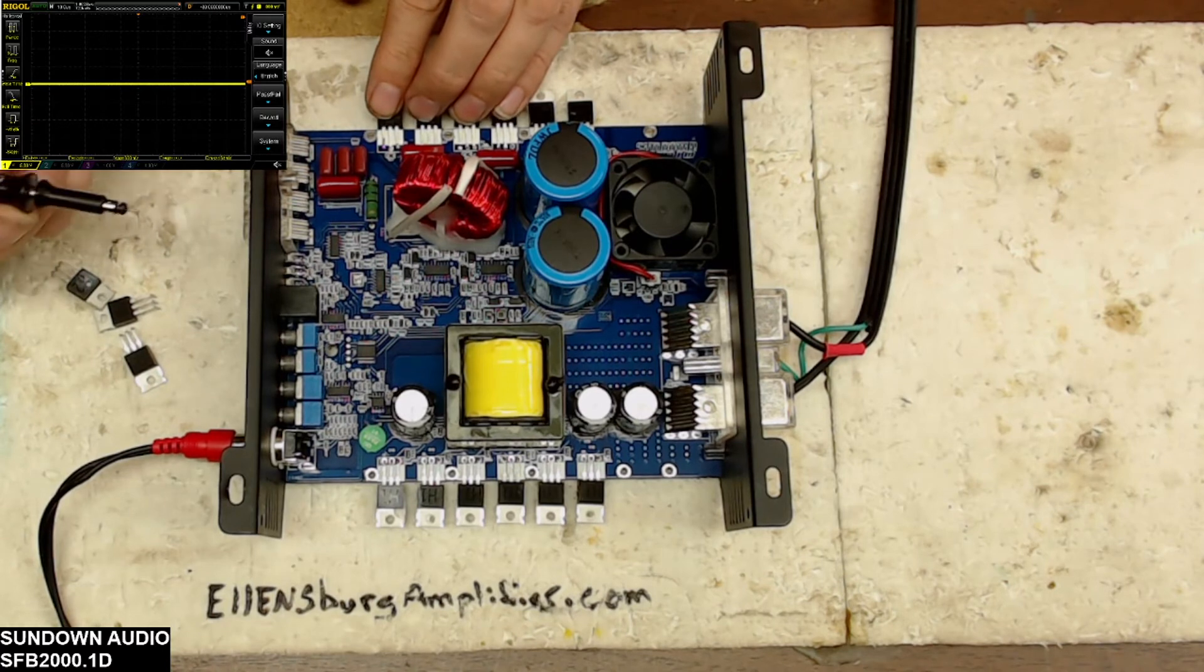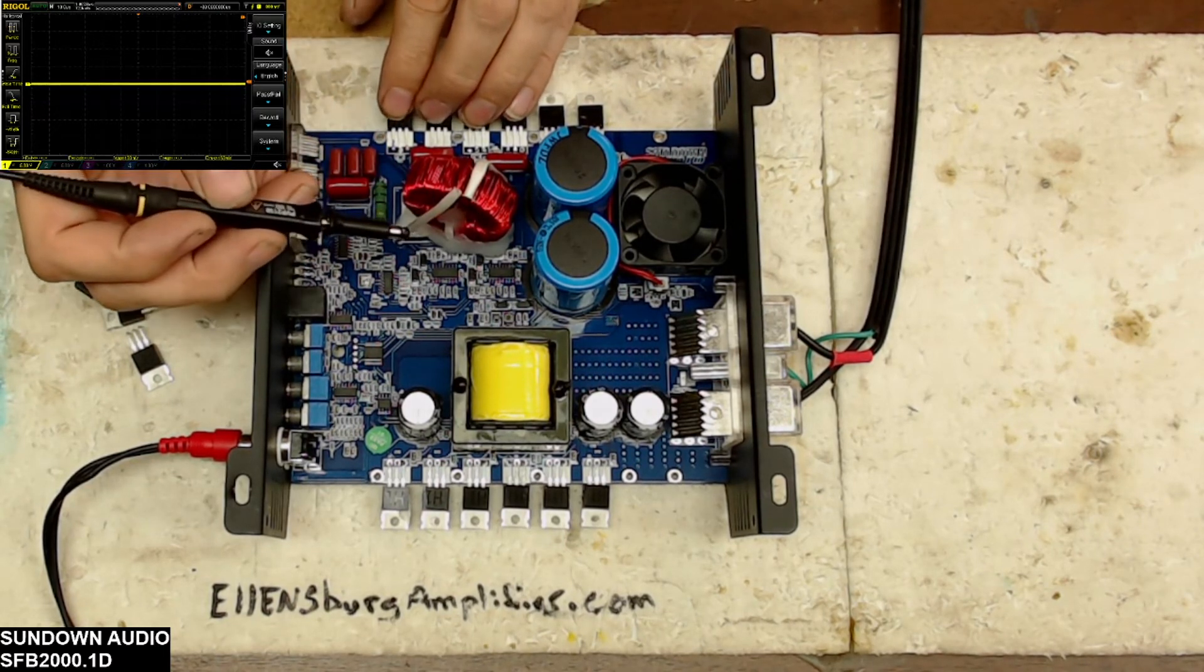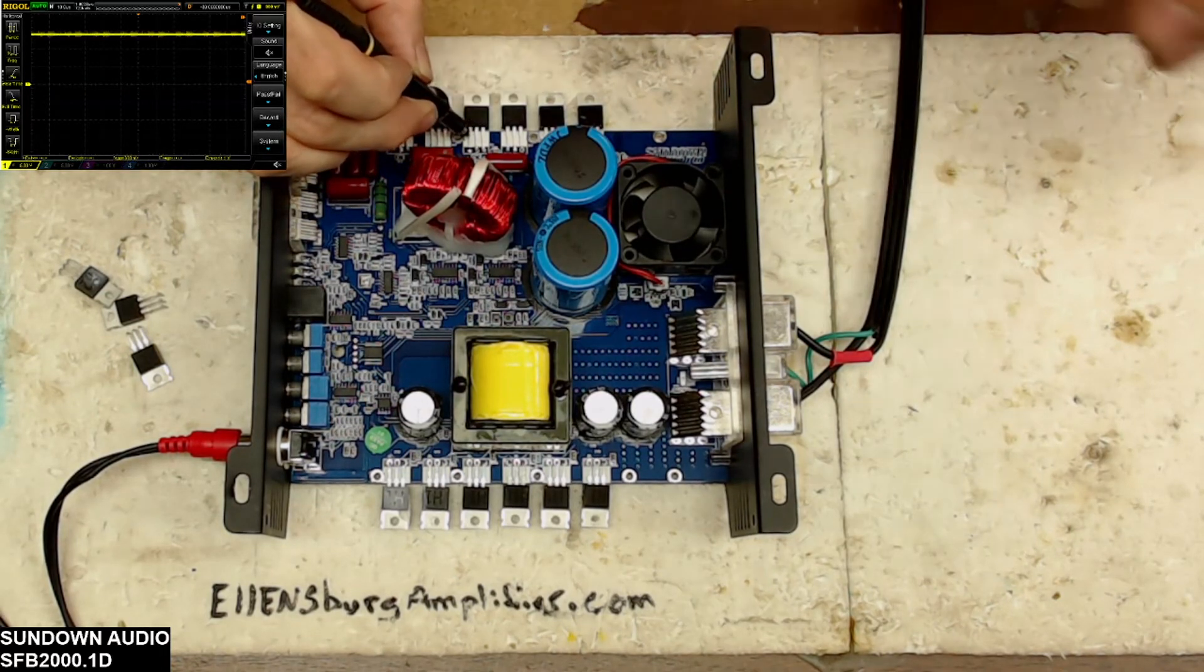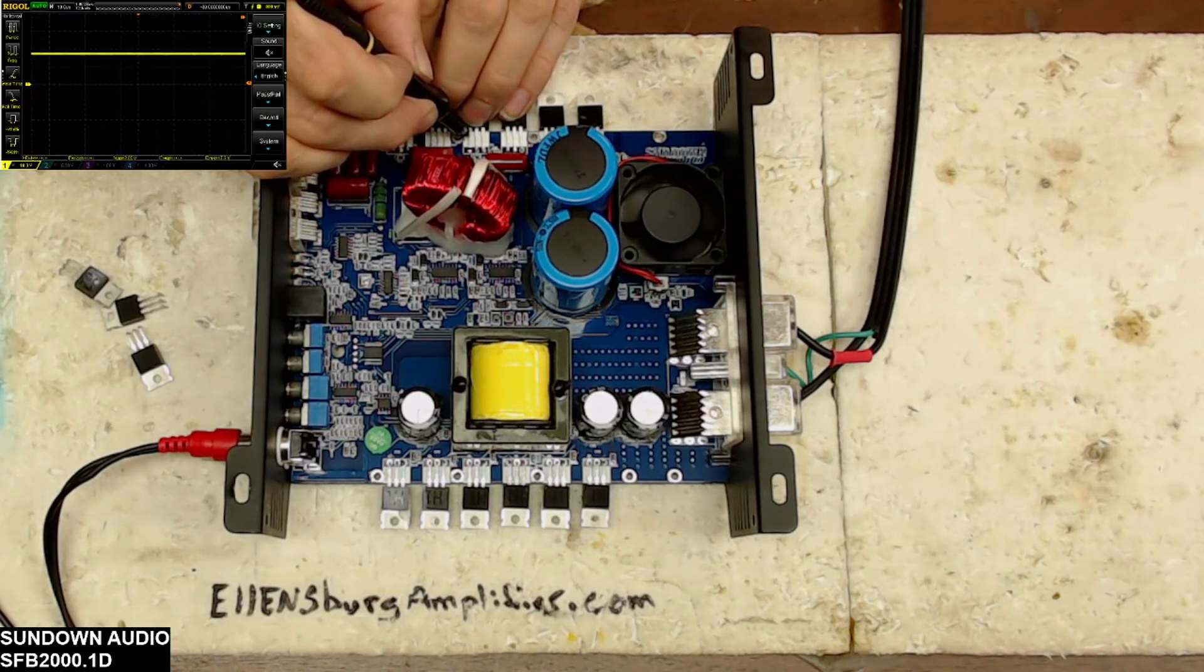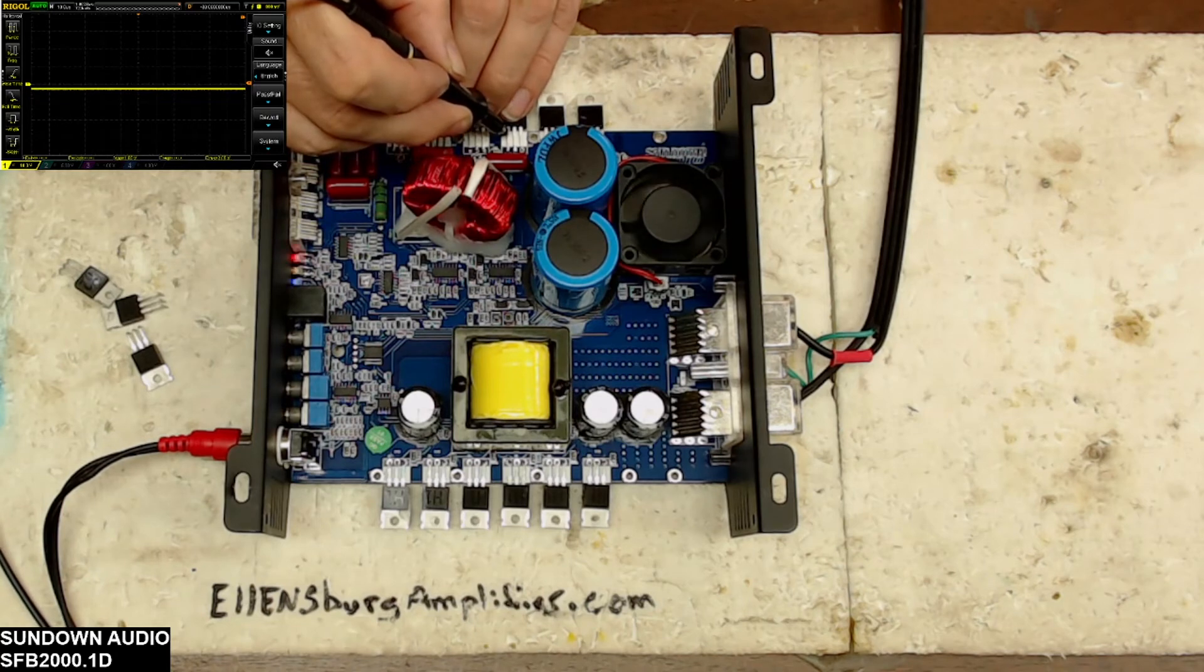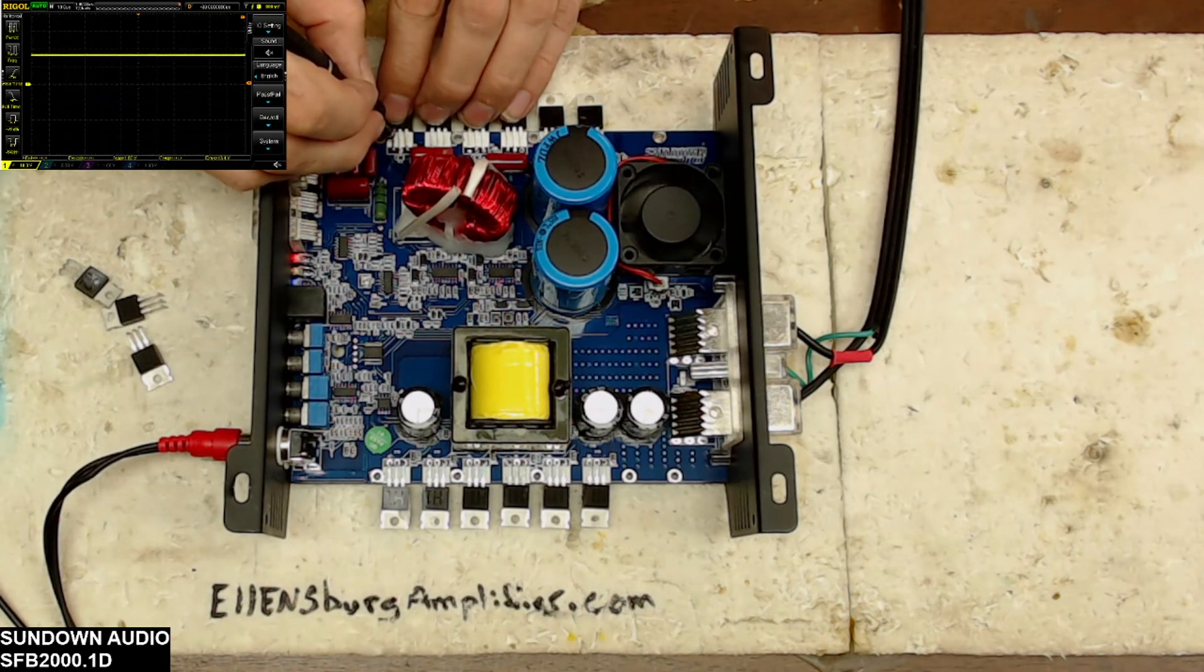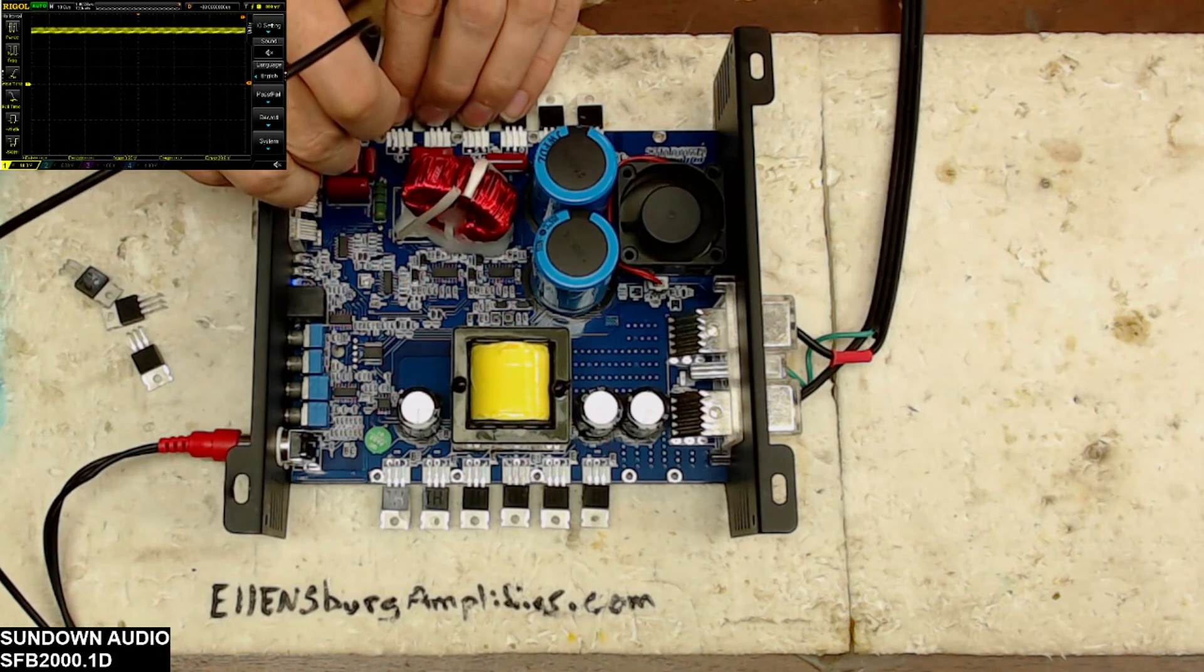Now I'm just going to check the output drive on this to make sure both drive ICs are still functional. Again, they are the IRS 20957s. You got the screen there on the upper left hand corner, and I'm just going to fire this up here real quick. We did have drive there, so I just want to check both ICs to make sure we have drive, make sure both ICs have survived. It looks like this Sundown Audio board got lucky and did not lose its drive, which is perfect.